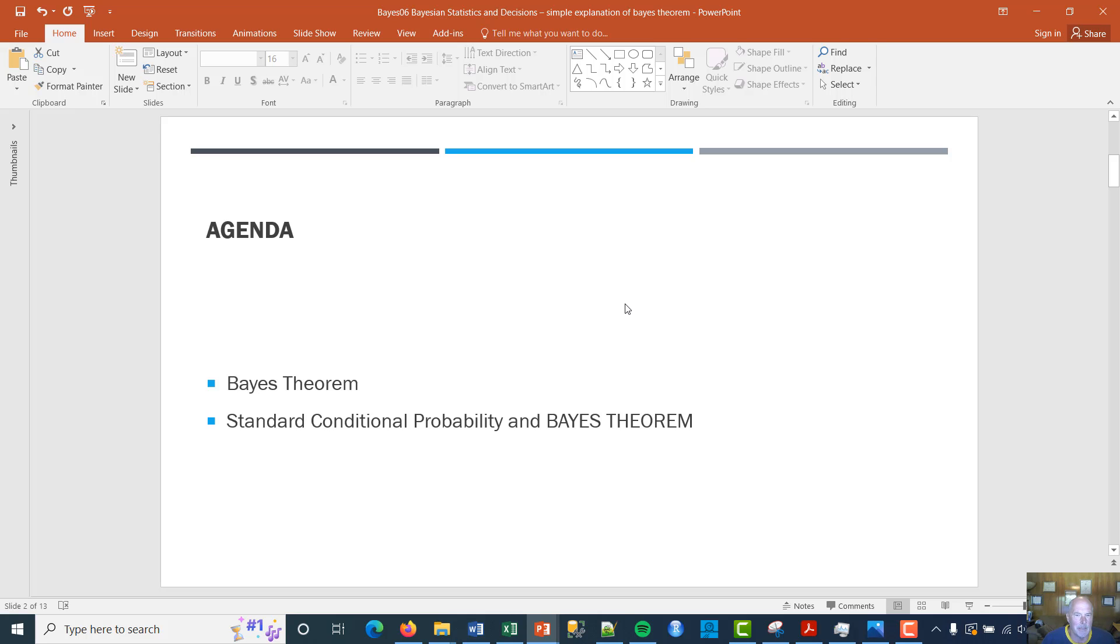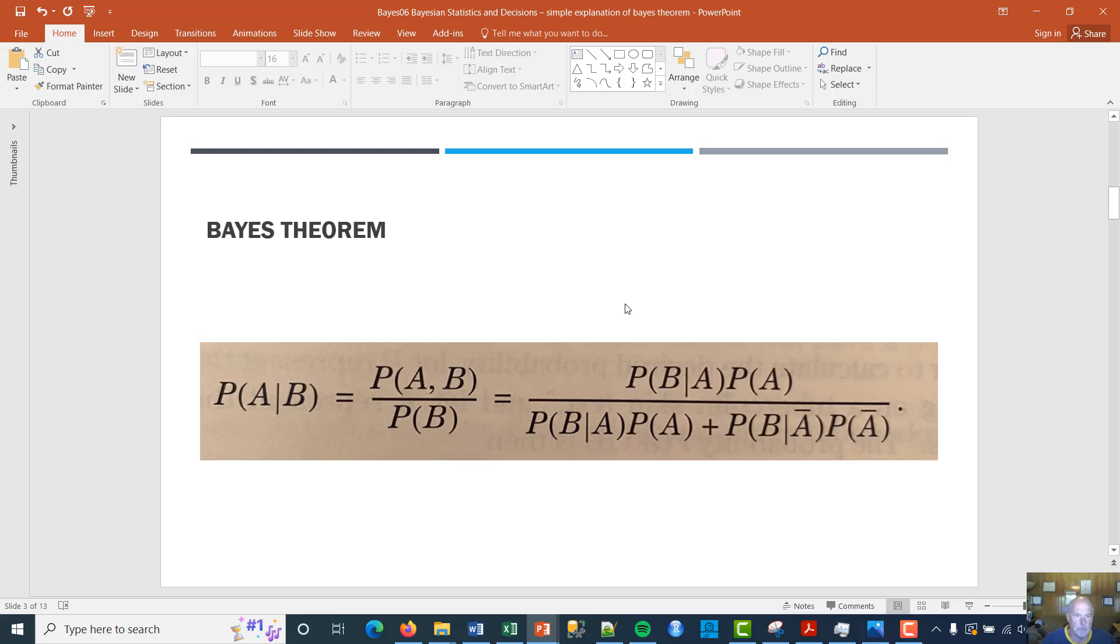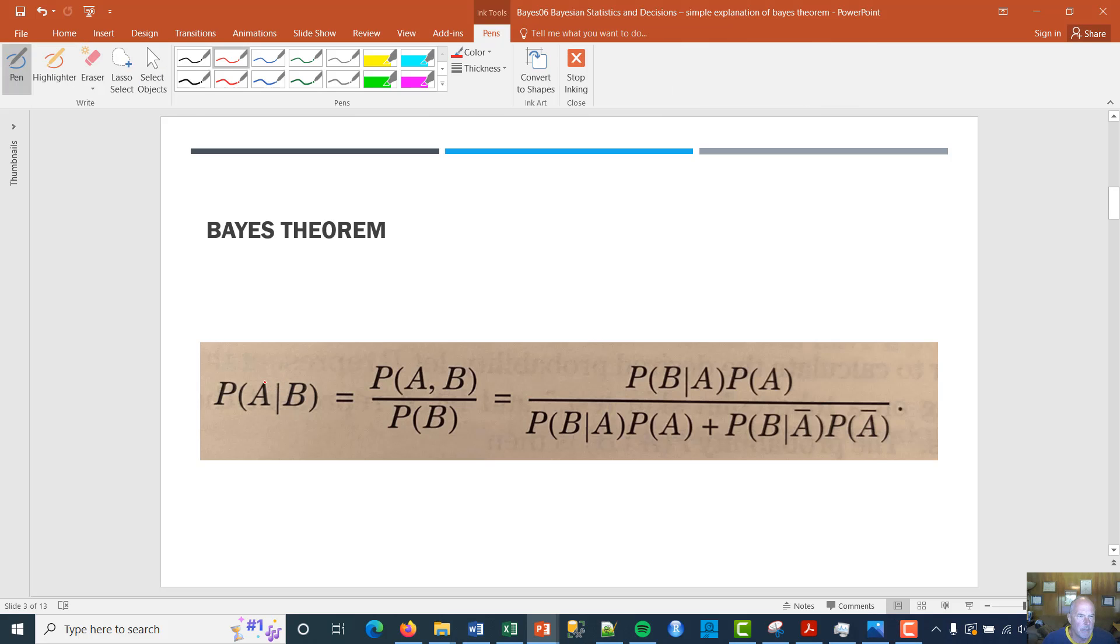I'm going to show you Bayes' theorem and I'm going to show you how what we've done so far actually translates into Bayes' theorem. So this is Bayes' theorem right here. So the probability of A given B, let me get a tool. The probability of A given the probability of B is the intersection, the probability of both events happening divided by the probability of B.